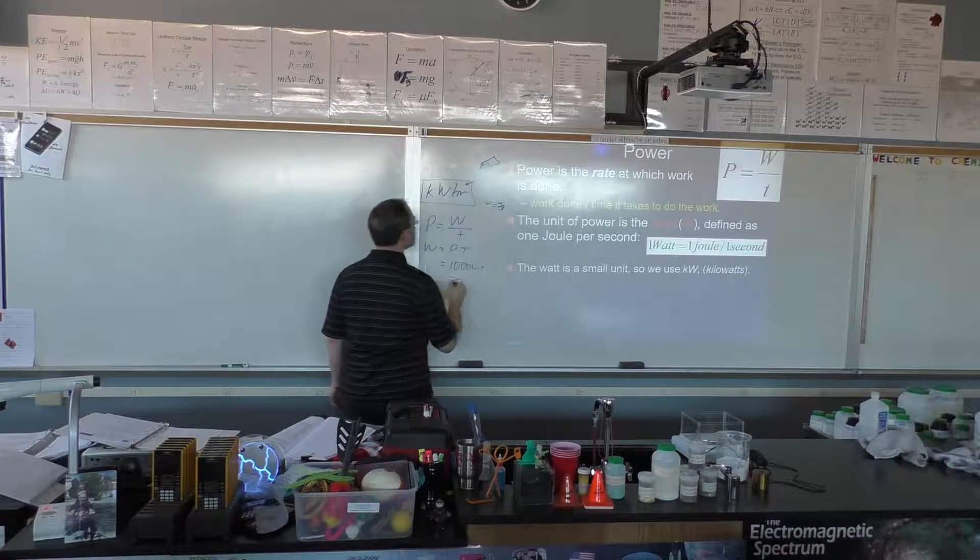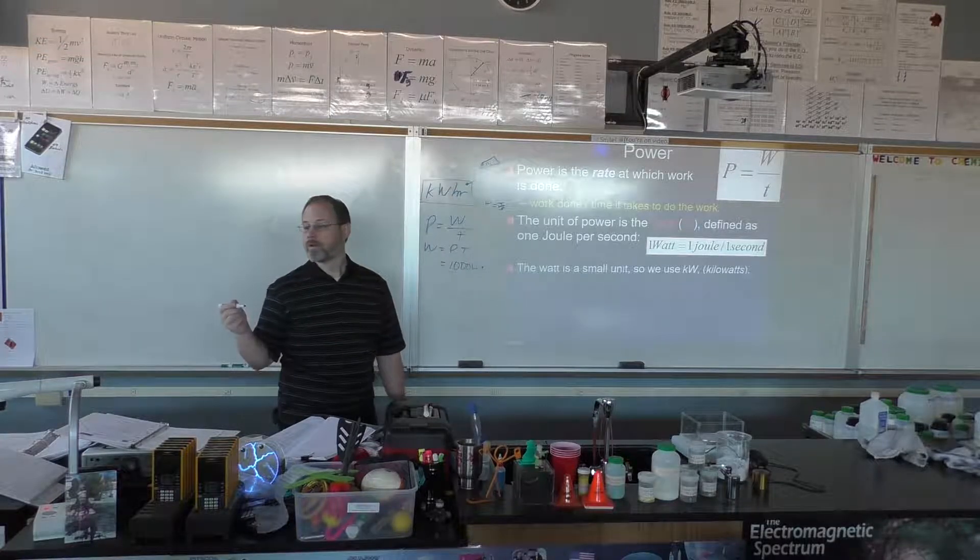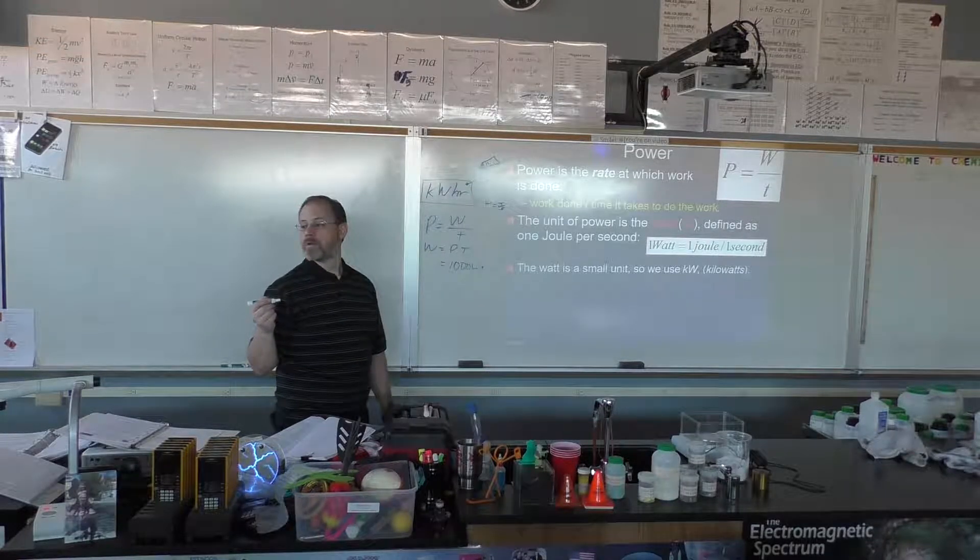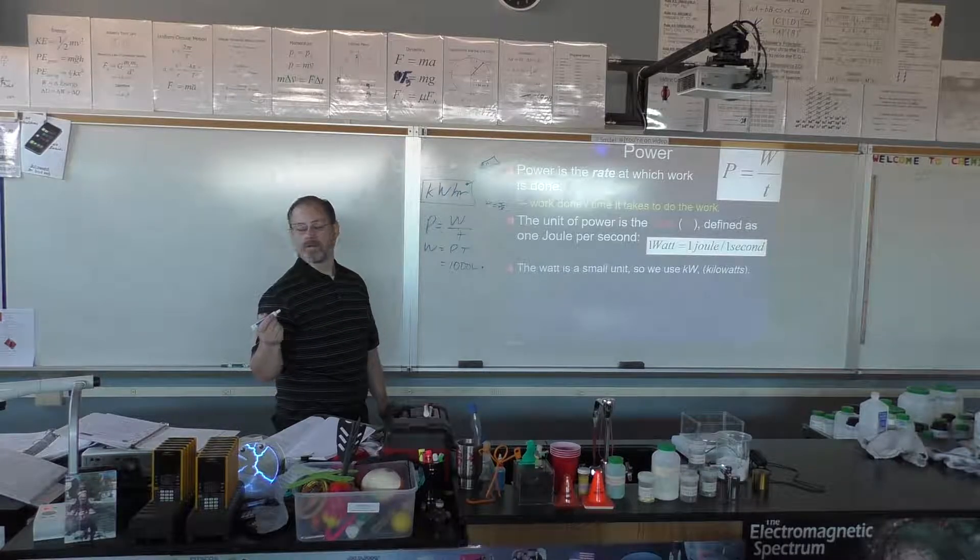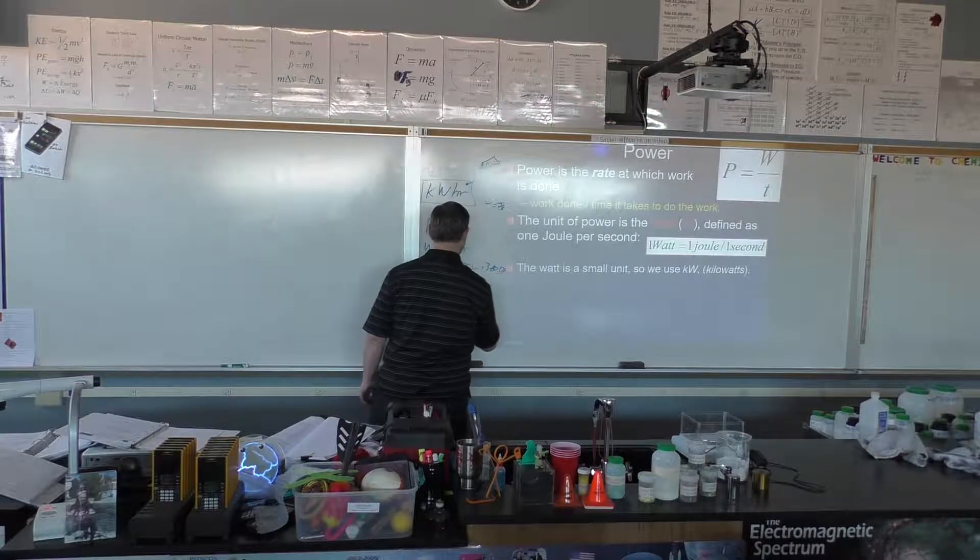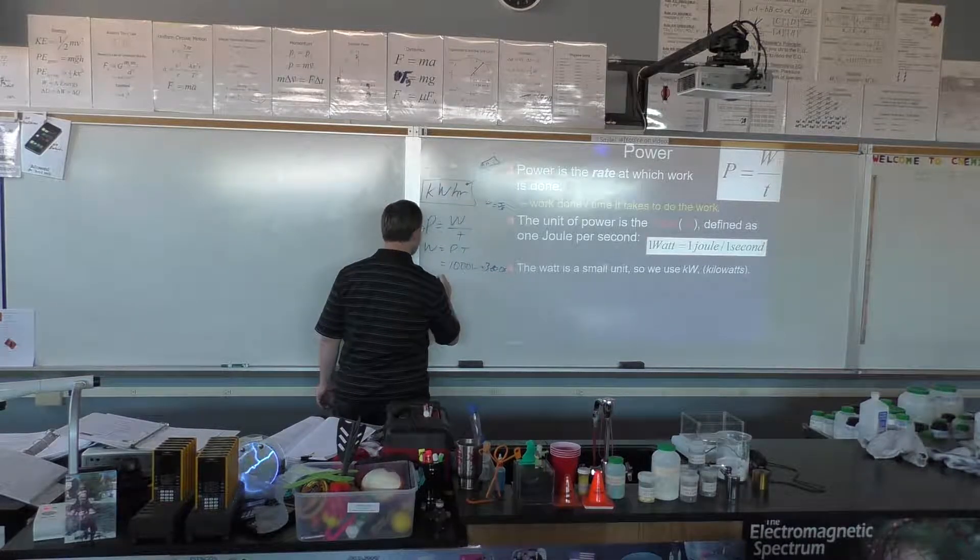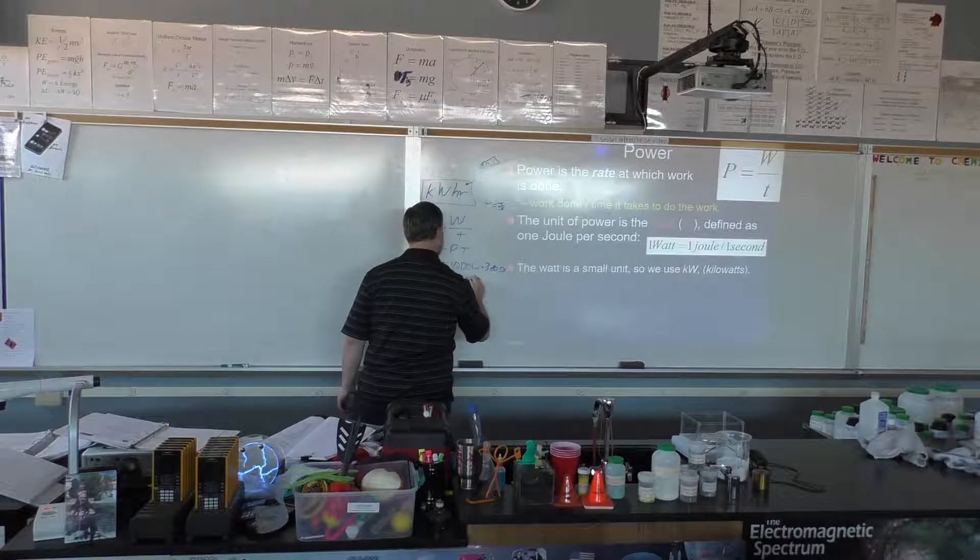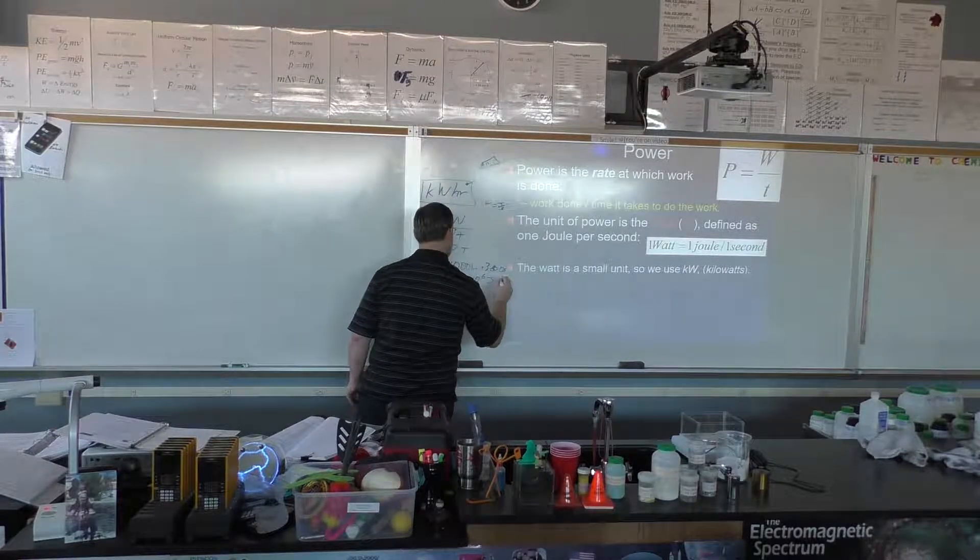So how many seconds is an hour? 60 times 60? Oh, 3600. Yeah, 3600. So 3600 seconds, so a thousand times 3600 seconds is 3.6 times 10 to the 6 joules.